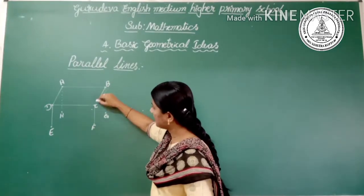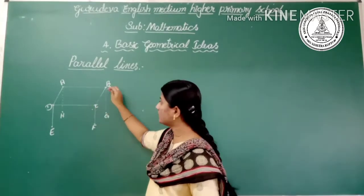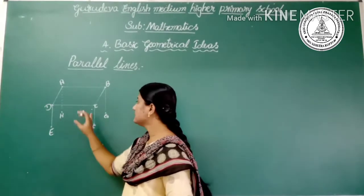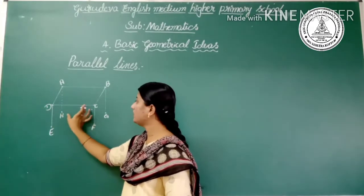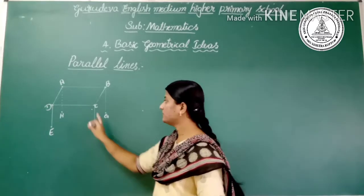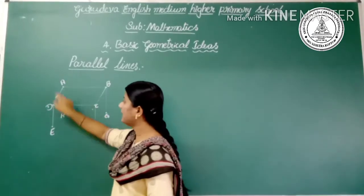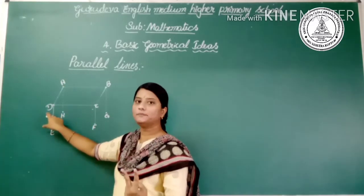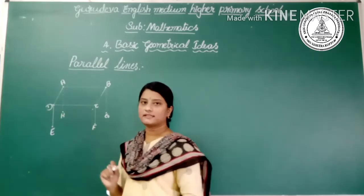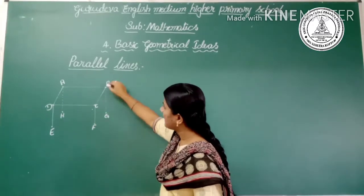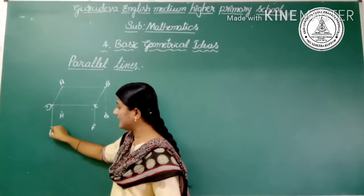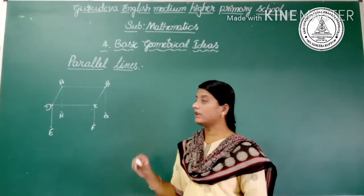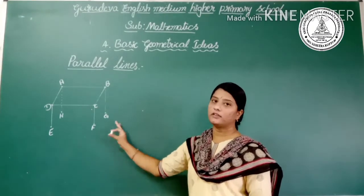Then CD — AD also has two end points, so it is a line segment. Also BG, DE, and AH are also line segments. We can observe and identify these in the given table.